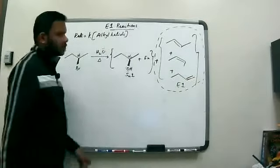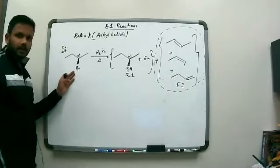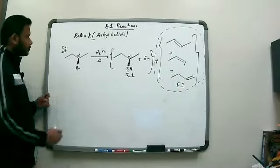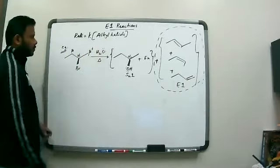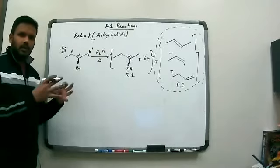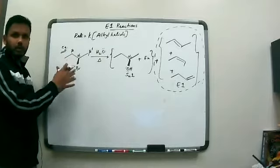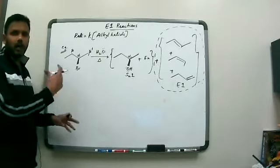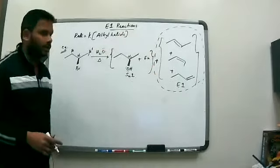How do we get those E1 products? In this particular case, we have one alpha carbon, a beta carbon, and what I'm going to call a beta prime carbon. Similar to E2, if there is more than one beta carbon, then you have to track all of those to get your products for elimination reactions.